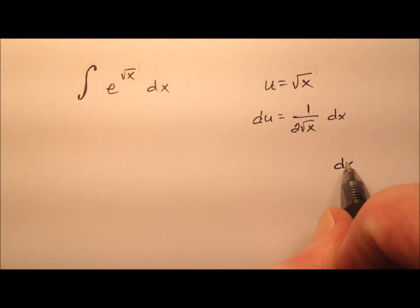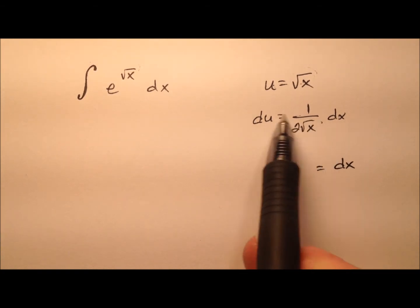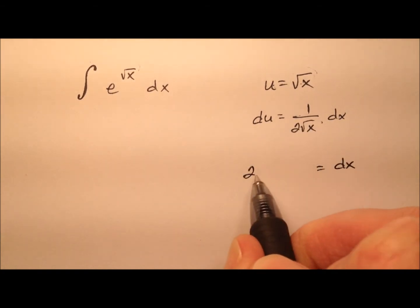And solving for dx, we can multiply both sides by this 2 times the square root of x. And we'll see that dx equals 2 times the square root of x du.